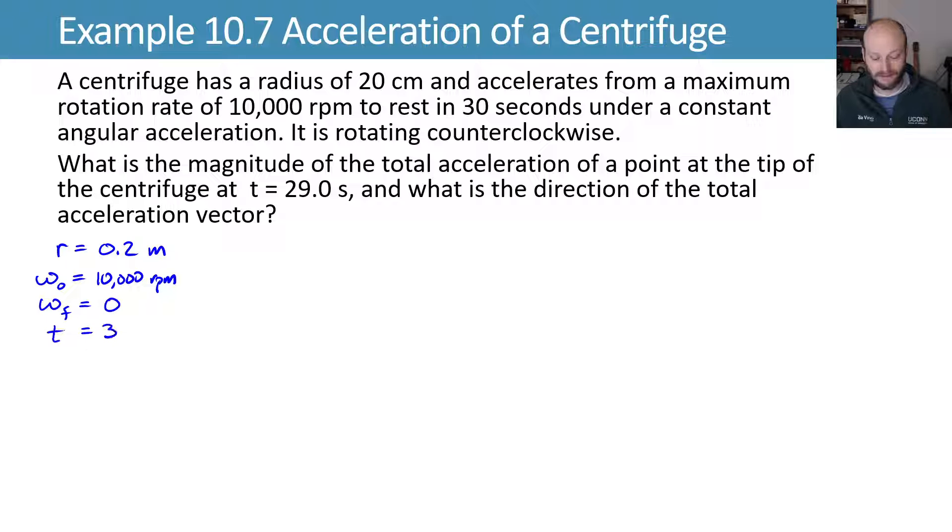Omega final is zero. It's rotating counterclockwise. What's the magnitude of the total acceleration of a point at the tip of the centrifuge at t equals 29 seconds? All right. So we have a constant angular acceleration and we want to find my acceleration and the direction of the acceleration vector. So we want the magnitude and direction.